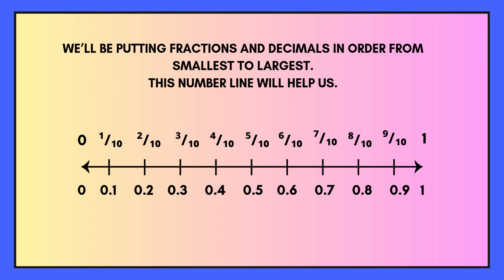We'll be putting fractions and decimals in order from smallest to largest and we are going to use this number line to help us. This number line shows fractions at the top and their matching decimal numbers underneath. Each part is the same size, so you can see how fractions and decimals are equal.